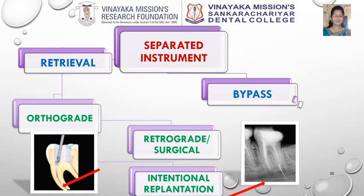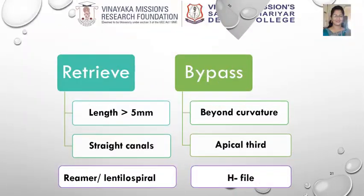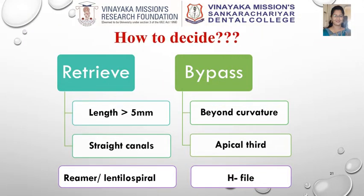So how do we decide? If the length of the separated instrument is greater than 5 mm, it is in a straight canal, and if it is a reamer or lentulo spiral, then it can be retrieved. If the separation occurred beyond the curvature in the apical third and if it is an H-file, it should be bypassed.